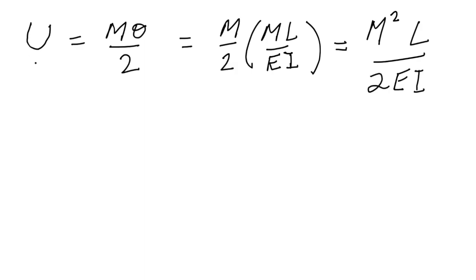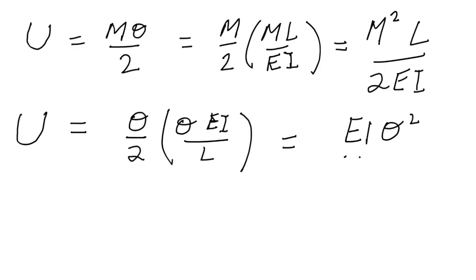Likewise, we can instead eliminate M. We can leave theta and write M in terms of theta, so we end up with theta times EI over L, which is then just EI theta squared over 2L. So these two expressions are equivalent.